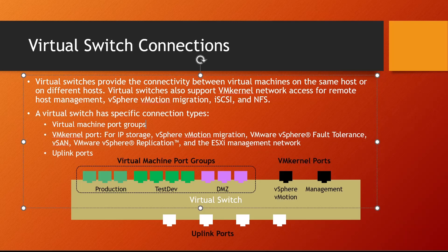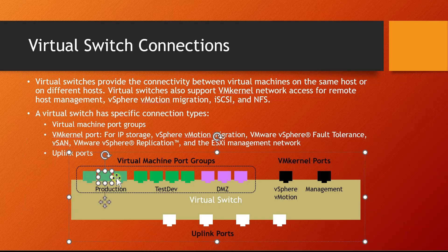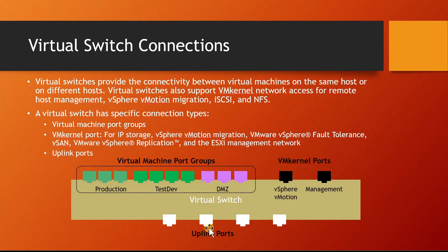Each port group will have multiple virtual network adapters. The virtual machines connected to the virtual adapters on a specific port group can communicate between themselves without any problems. Virtual machines within the same ESXi host can communicate using a standard switch. Virtual machines on a different host can also communicate using the standard switch — the virtual switch communicates through the uplink to the physical adapter, which connects to the next host machine's uplink and virtual switch.